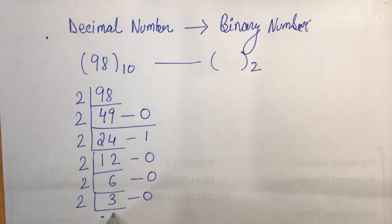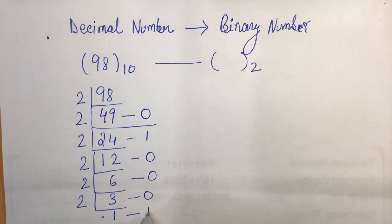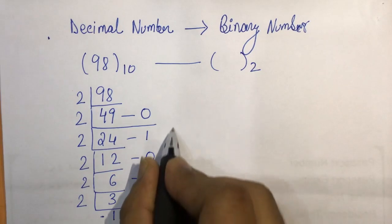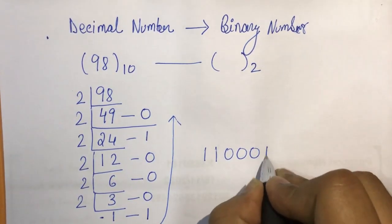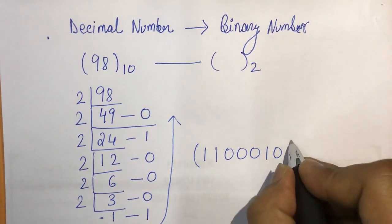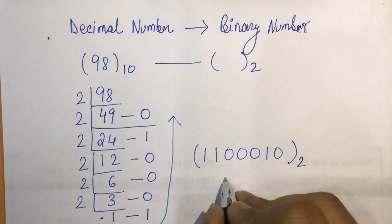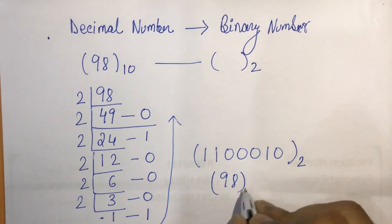So now we will go from the bottom and then we go up. So 1, 1, 0, 0, 0, 1, 0 is the binary equivalent of 98 decimal.